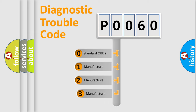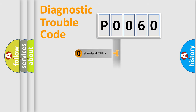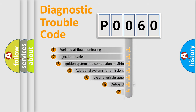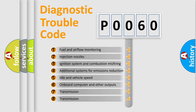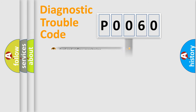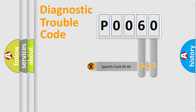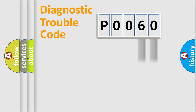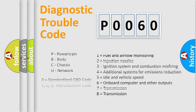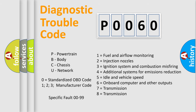If the second character is expressed as zero, it is a standardized error. In the case of numbers 1, 2, or 3, it is a more manufacturer-specific expression of a car-specific error. The third character specifies a subset of errors. This distribution is valid only for the standardized DTC code. Only the last two characters define the specific fault of the group, and this division is valid only when the second character code is expressed by the number zero.